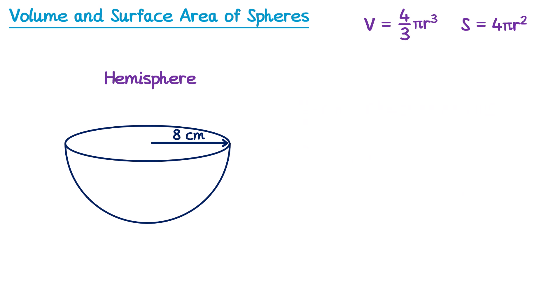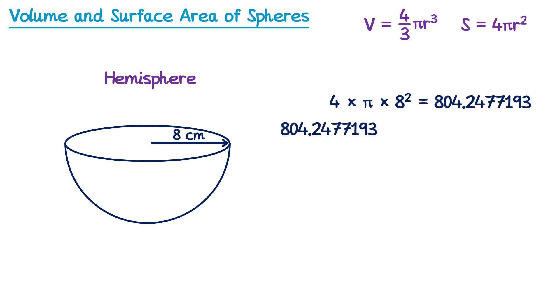Surface area is slightly different. We start by working out the surface area of the whole sphere: surface area equals 4 multiplied by π, multiplied by r squared, so 8 squared. We then take that result and divide it by 2, giving half of the sphere's surface area — the curved part, shown in blue on the diagram. But that's not the full surface area of the hemisphere, because we also have the circular face.